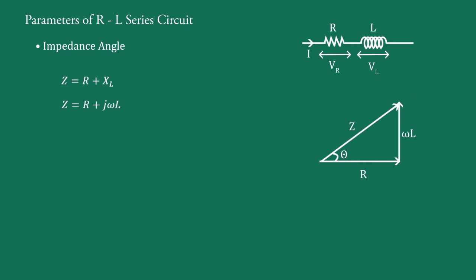Hence, the resultant impedance Z is obtained by this vector. This angle theta subtended by R and Z vectors is known as impedance angle or phase angle of RL Series Circuit.